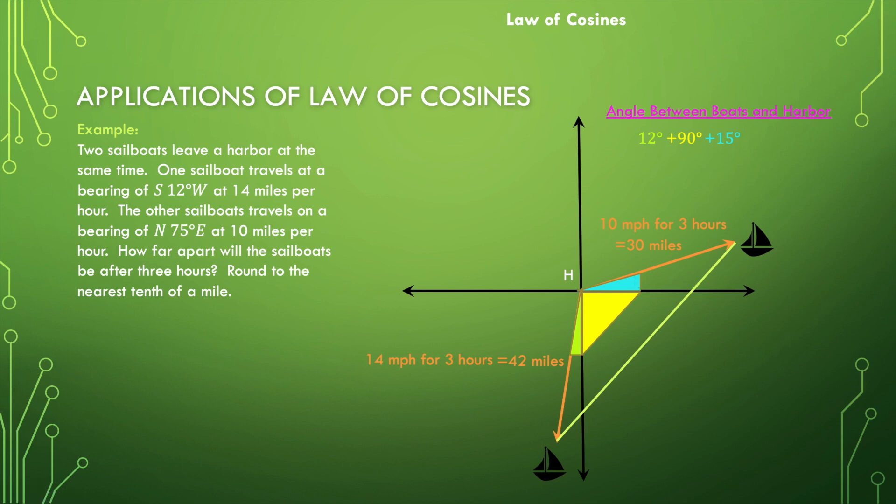That entire angle, the angle formed between the first sailboat, the harbor and the second sailboat, this angle here can be found by adding those three things together. And we find it's 117 degrees. Excellent. So now I have my side, my angle, my side, and I'm ready to actually calculate this distance. Let's call this distance d.